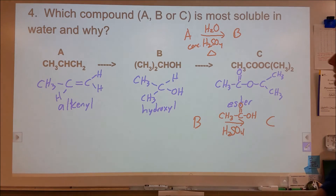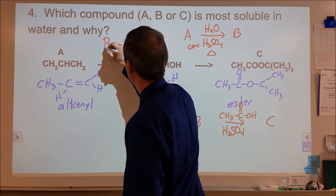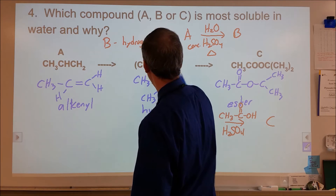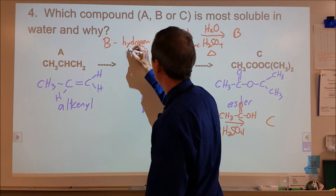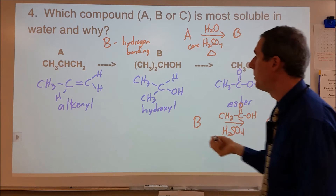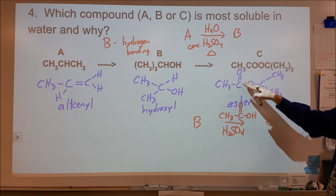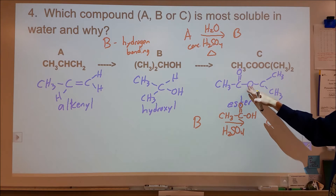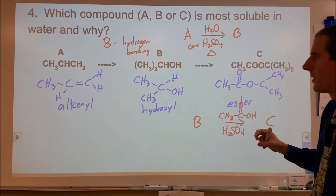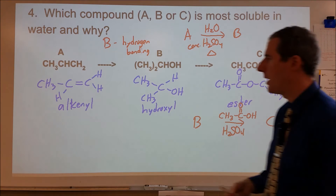Which compound is most soluble in water? That would be compound B. The reason is it has hydrogen bonding capabilities due to the hydroxyl functional group. The hydrogen bonding of compound B interacts well with the hydrogen bonding of water, whereas the ester has some solubility because it's polar, and the alkene is really not going to dissolve in water because we're looking mostly at dispersion forces, which don't interact well with the hydrogen bonding of water.